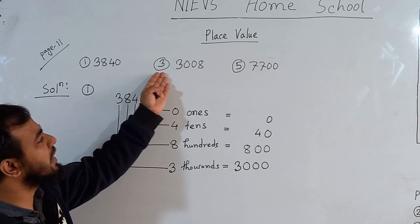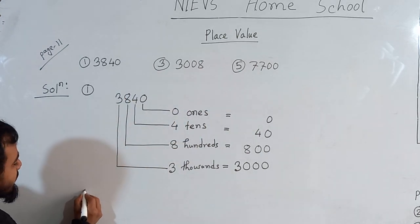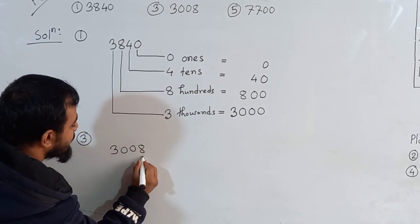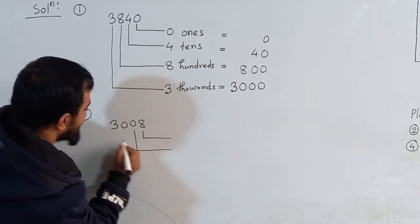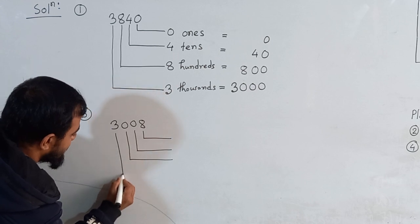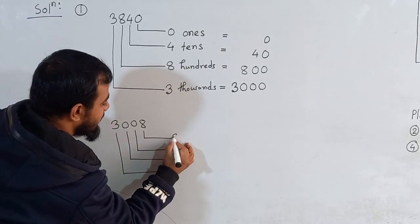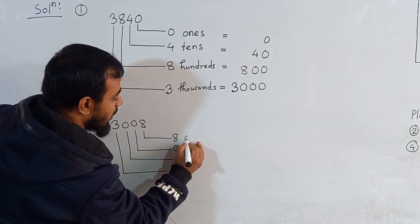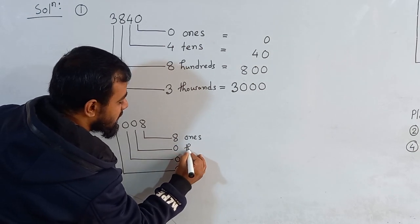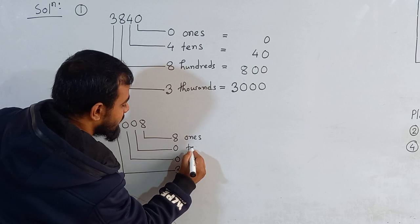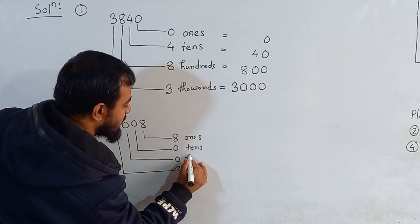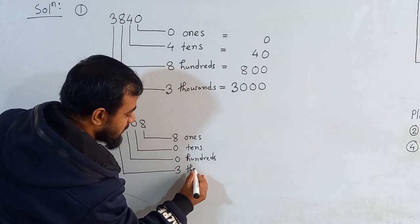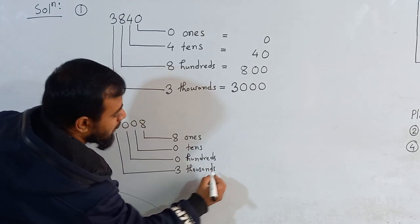Now, like this way, we'll solve number 3 and number 5. Number 3 has the number 3008. We give the vertical and horizontal lines the same way. Now replace the digits: 8, then 0, 0, then 3. Write down the place value names: 8 is 1's, 0 is 10's, 0 is 100's, and 3 is 1000's. We will give the equal sign.